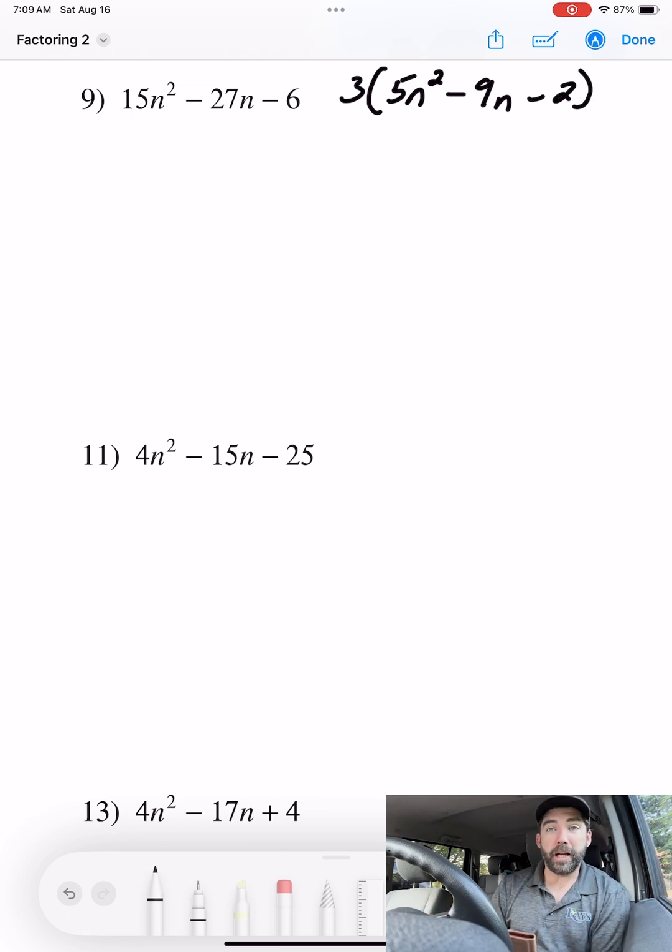Now we can multiply, slide, and divide. But I'm going to leave this 3 out here for later. Alright, 5 times negative 2 is n squared minus 9n minus 10.